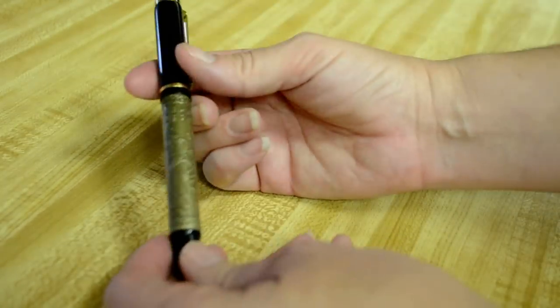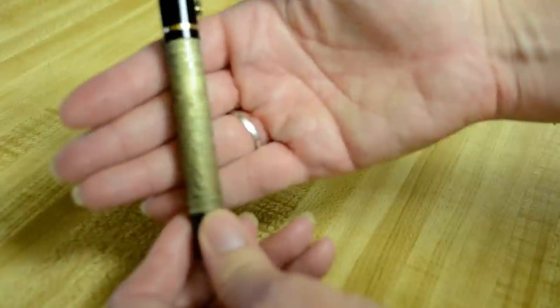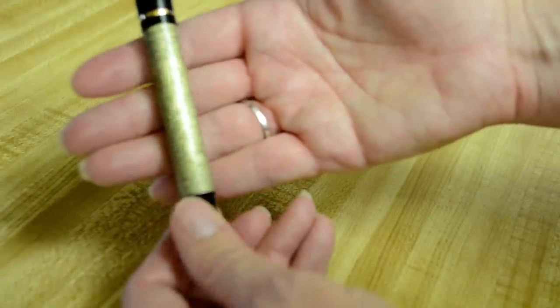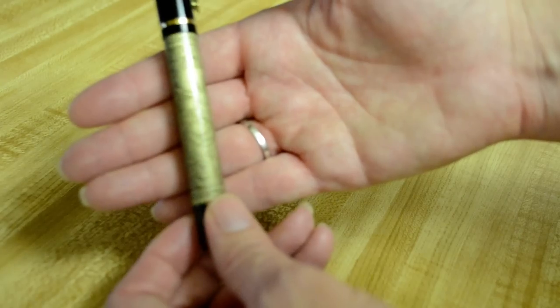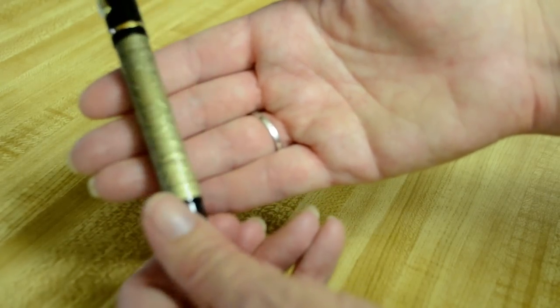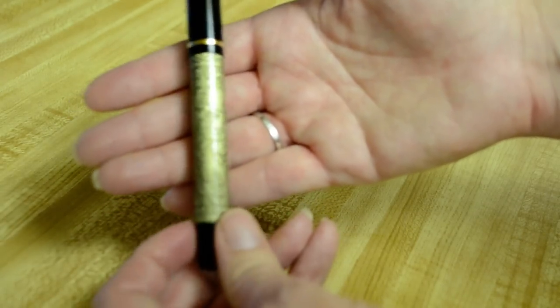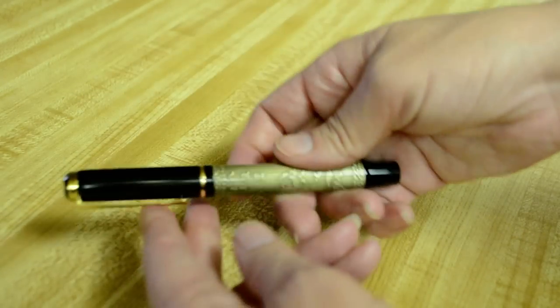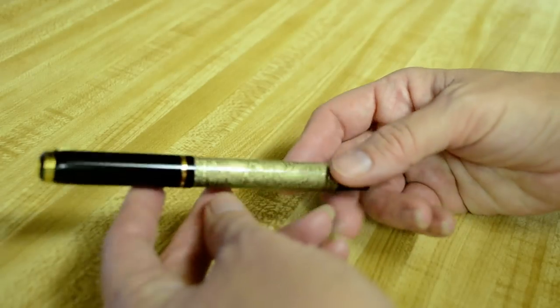They call it the Chinese Golden Horse because of this gold body here and it's got some horses pressed into the metal of the body that appear to be galloping across the field. Very Asian inspired. It is a pretty pen. I really do like the look of this pen.